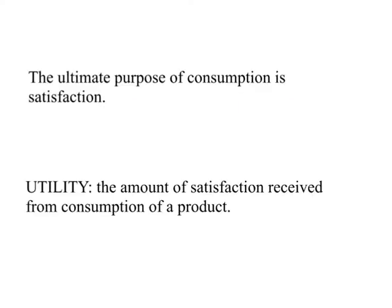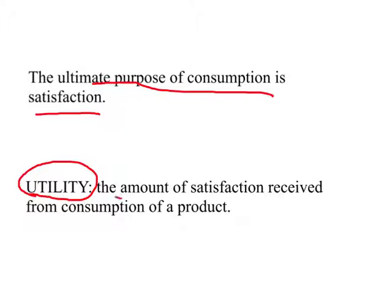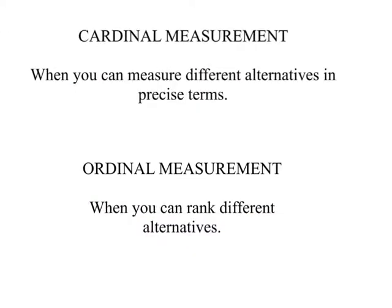Let us start a new topic: consumer theory. In this, what we try to do is understand consumer behavior — what factors go into the purchasing decisions made by different individuals, and we'll look at one person at a time. The reason why we buy stuff is because purchasing gives us satisfaction. The ultimate purpose of consumption is satisfaction, and in economics we call this utility — the amount of satisfaction received from consumption of a product.